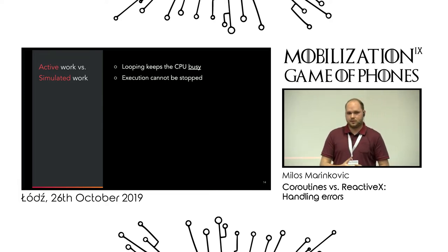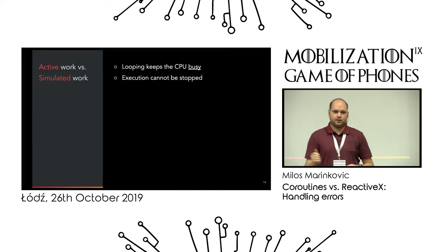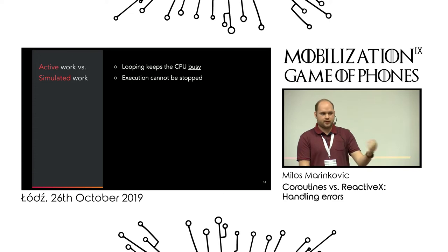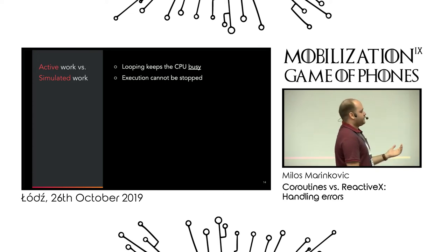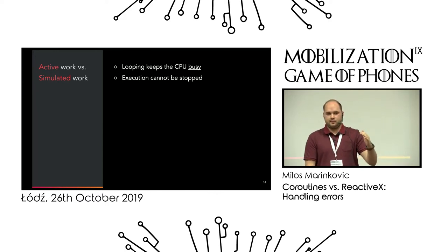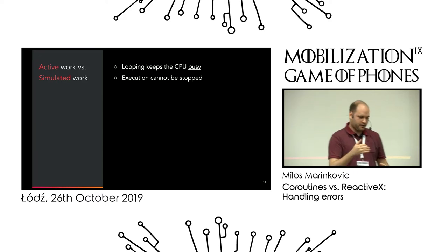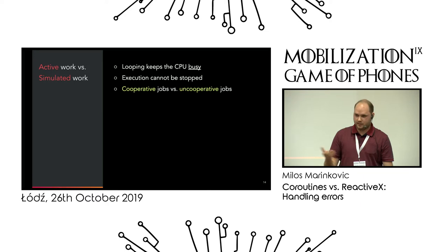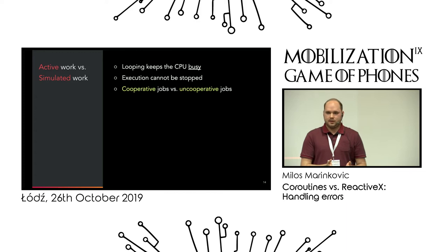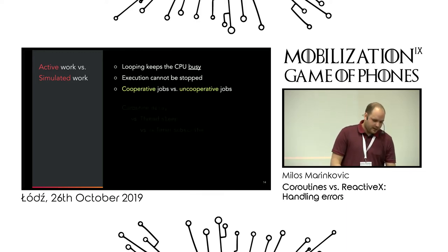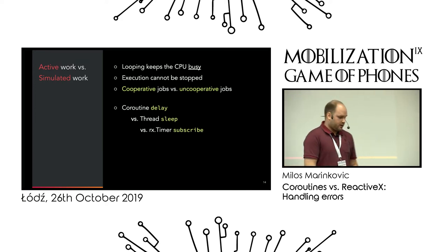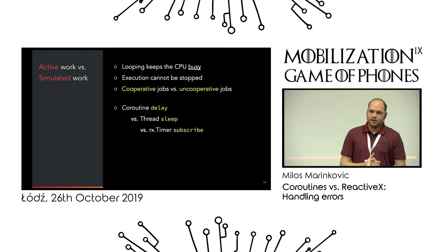Similar to threads, there is no way to stop execution forcefully. For threads, if you call thread.interrupt it basically just sets a flag, and whoever was executing work in that thread would need to be aware and check if the thread was interrupted and then stop the work. This is very similar to how coroutines work. This is where we have the distinction between cooperative jobs and uncooperative jobs. Cooperative ones check: am I cancelled? Am I supposed to stop working now? One interesting exception is the coroutine delay function, thread's sleep function, and similarly Rx subscribe — because delay and sleep will both immediately throw an exception when you cancel them.